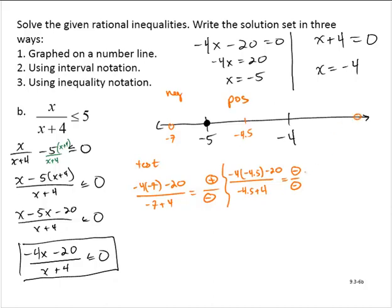Testing a number greater than negative 4, how about 0? Negative 4 times 0 minus 20 over 0 plus 4: that's 0 minus 20, which is negative, over 4, which is positive — a negative divided by a positive is negative. So we shade wherever the testing came back negative: the first interval and the interval to the right of negative 4.